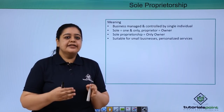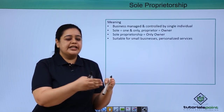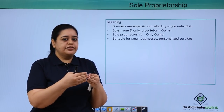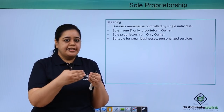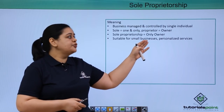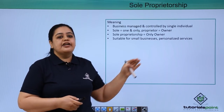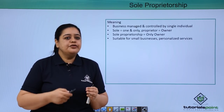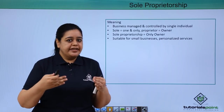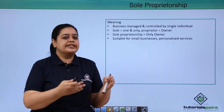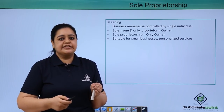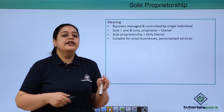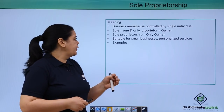Sole proprietorship is suitable for small businesses like Rama's kitchen — she started on a very small scale and is a one-man show right now, so it would be suitable for her to start on a sole proprietorship basis. She would be able to give personalized services: based on the diet given to her customers, she can customize and provide different services, maintaining a one-to-one relationship with her customers.